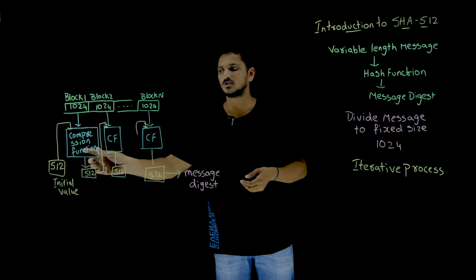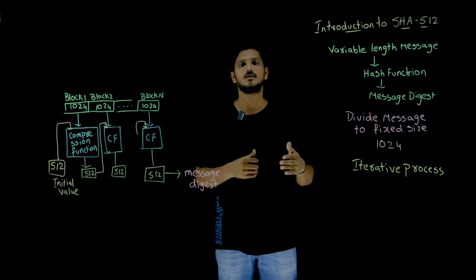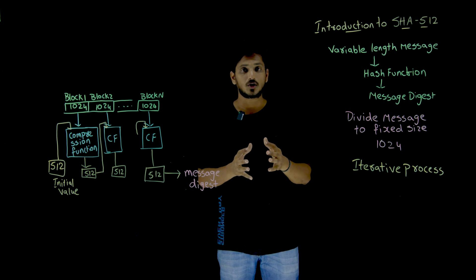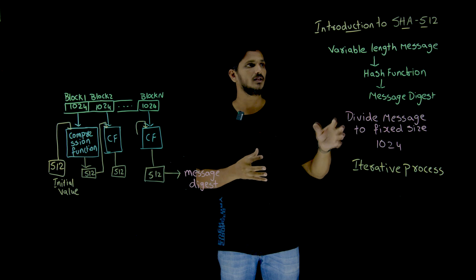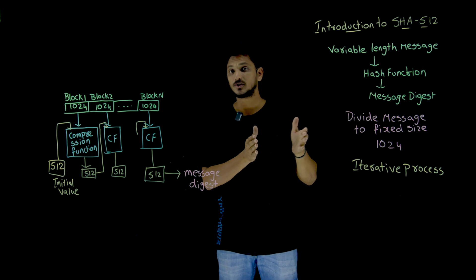After that, we go deeper into the concept of what happens inside the compression function, all of them step by step. Hope you got the clarity on why this cryptography hash functions follow iterative process and fixed size blocks.